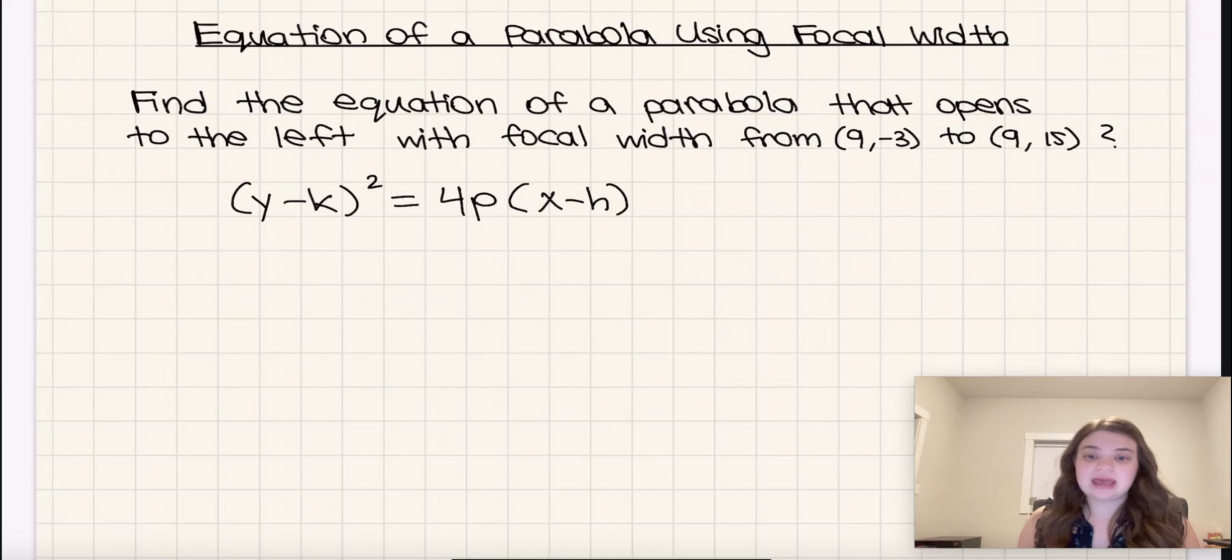Now, h and k, keep in mind, they just represent the vertex. And then we also need to find the p value. So if we can find h, k, and p, and then plug those in and simplify, then we're good to go. That's the name of the game here.